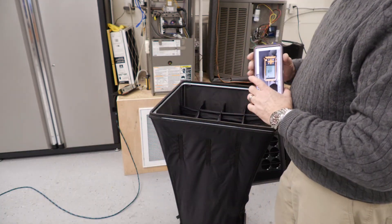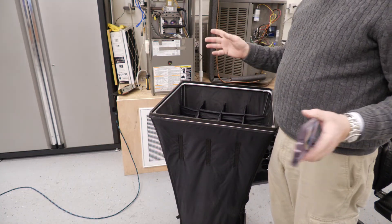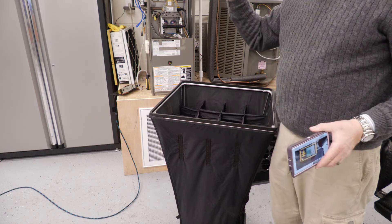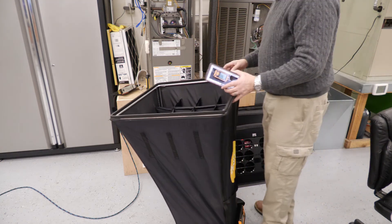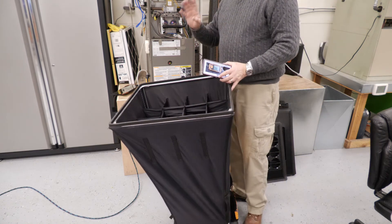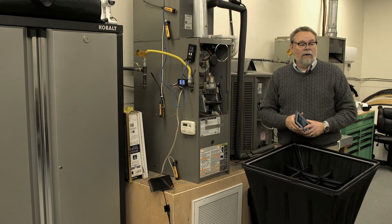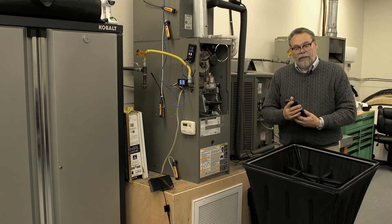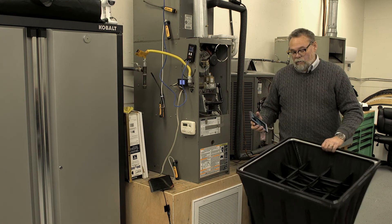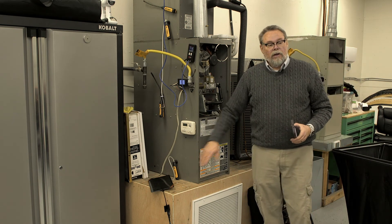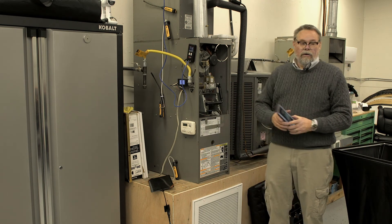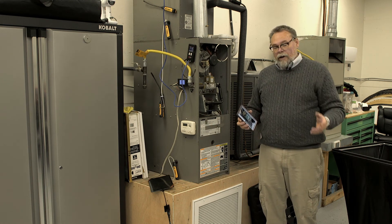You can't get any closer than that. And that's between flow grid, manometers, and your flow hood, all within three CFM. You can't beat that with a stick. So like I said, this is the easiest, quickest way to do it. Static pressures, you can do that in the field with the manometer. You don't need a flow grid. You don't need the flow hood. Both are very accurate.